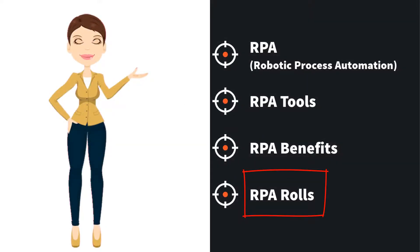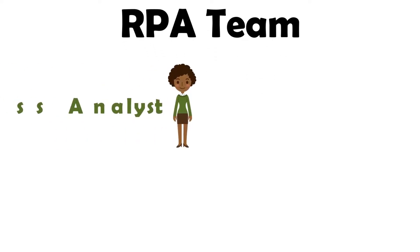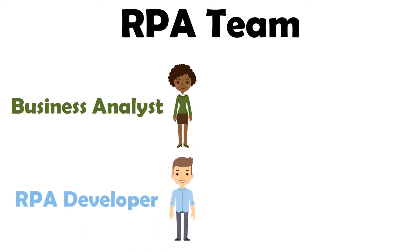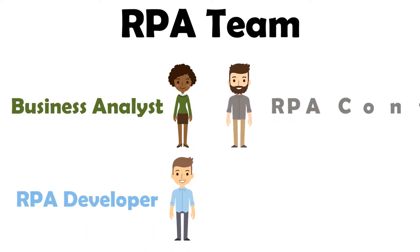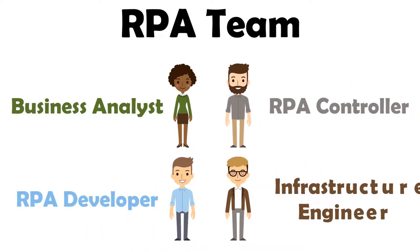Now we turn to the last point: RPA roles. The RPA team is made up of different roles. The main roles are: Business Analyst, RPA Developer, RPA Controller, and Infrastructure Engineer.